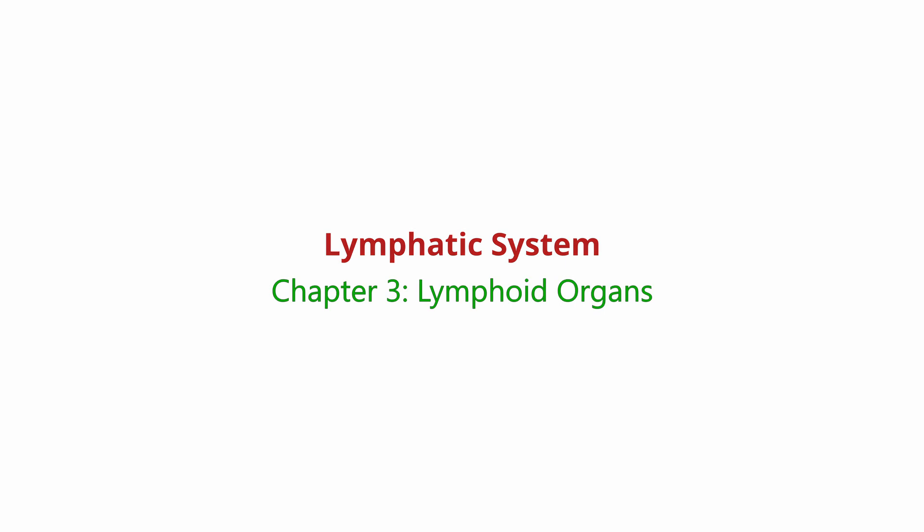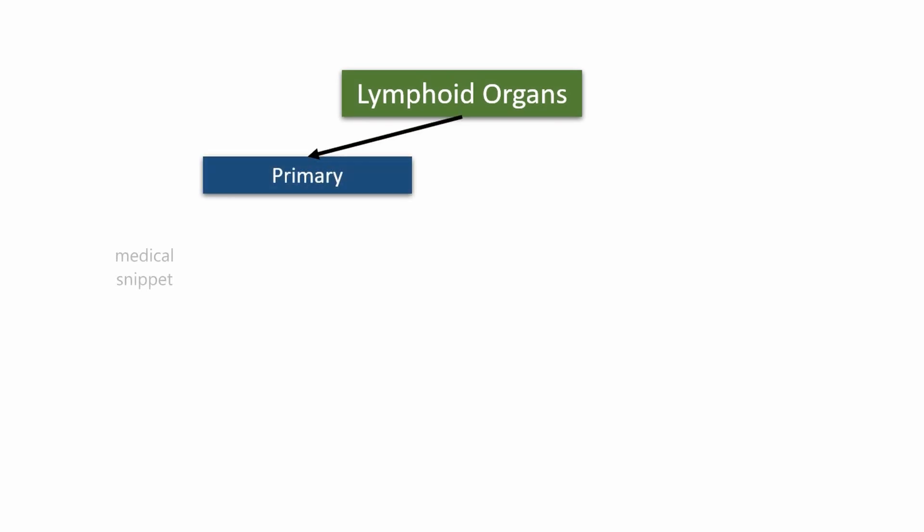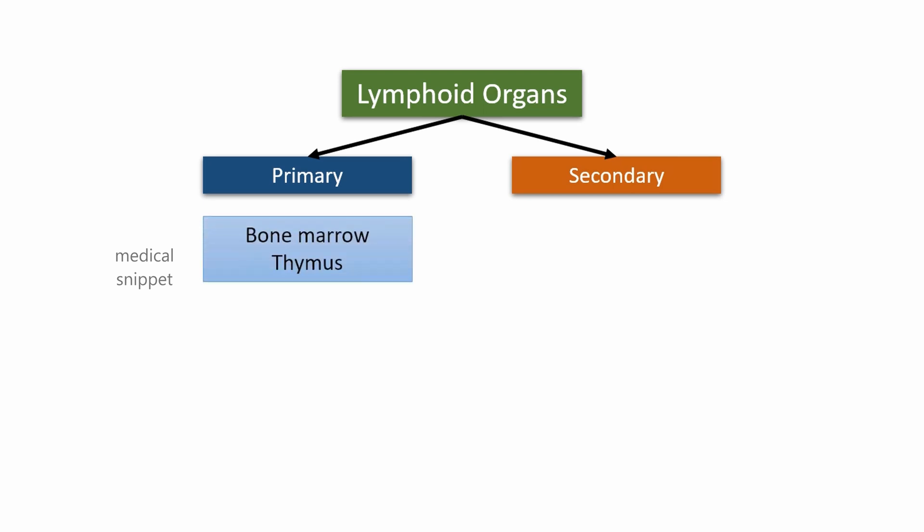These organs provide immunity for the body. They are divided into primary lymphoid organs and secondary lymphoid organs. Primary lymphoid organs are bone marrow and thymus. These are organs where immune cells, namely T-lymphocytes and B-lymphocytes, are produced. B lymphocytes mature within the bone marrow, whereas the immature T-lymphocytes migrate to thymus for maturation.